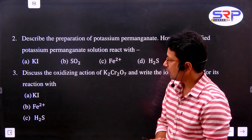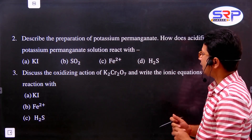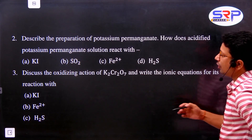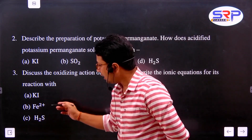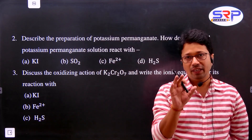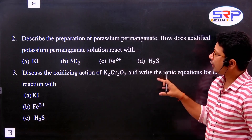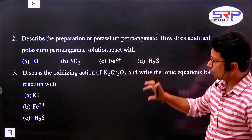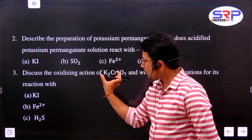Next: Discuss the oxidizing action of K2Cr2O7. Write the ionic equation for its reaction with KI, Fe2+, and H2S. Note that this question is the same type as the previous one - it is also a long question.